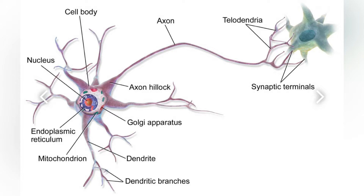Dendrites, also dendrons, are branch protoplasmic extensions of a nerve cell that propagate the electrochemical stimulation received from other neural cells to the cell body, or soma, of the neuron from which the dendrites project.